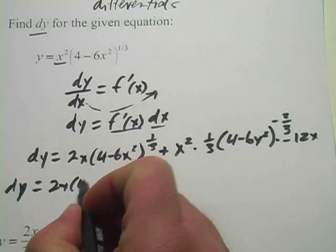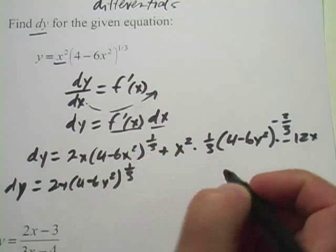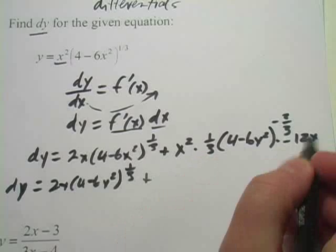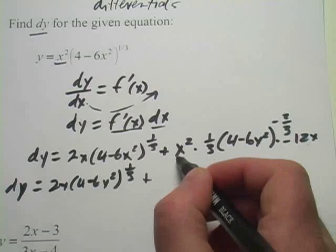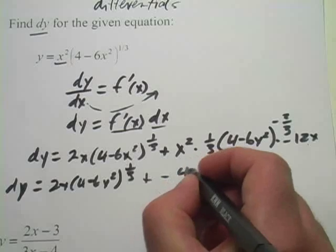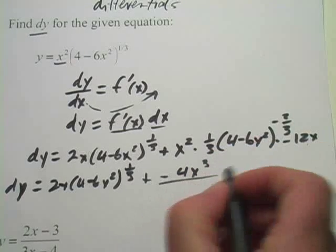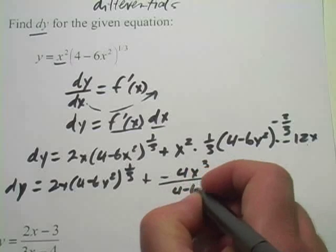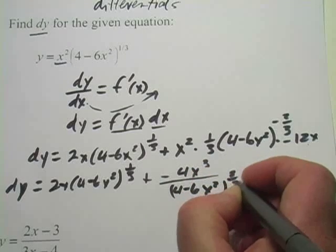So we've got 2x(4-6x²)^(1/3), plus -12x/3, which is -4x·x², so -4x³. I'll put this on the bottom of the fraction to get rid of the negative exponent. So we've got (4-6x²)^(2/3) in the denominator.